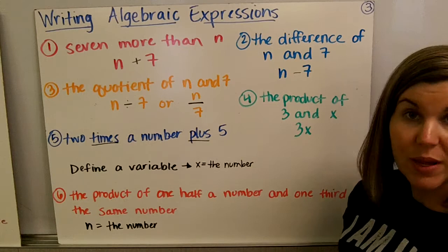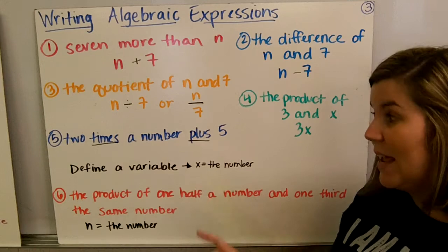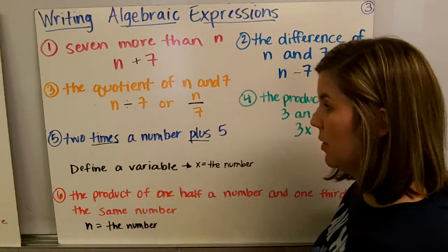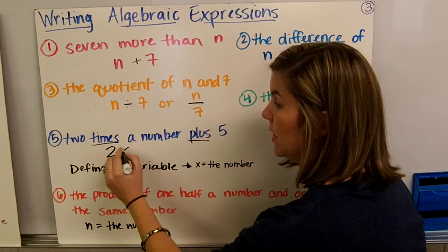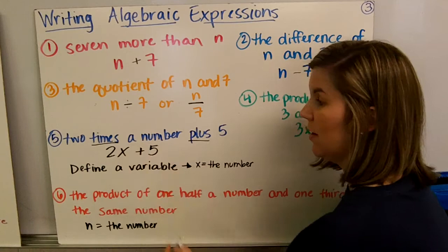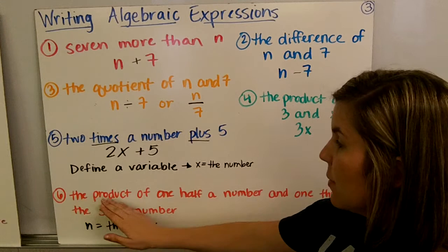Two times the number plus five. We have a couple things happening here: times and plus, so multiplying and adding. Two times a number—we don't know what this number is, so we can define the variable as x. Two times x would be 2x plus five.